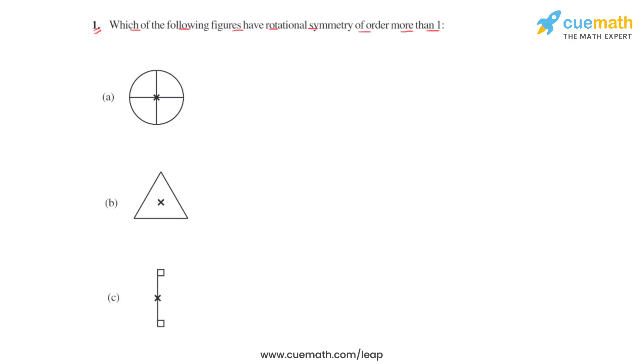Rotational symmetry is based on the concept that if a given figure is rotated by an angle about a fixed point — also known as the center of rotation — the figure still looks exactly the same.